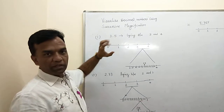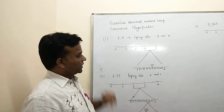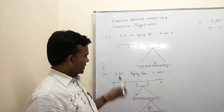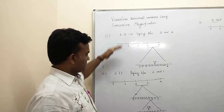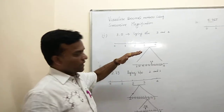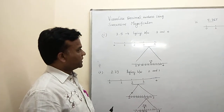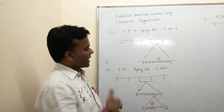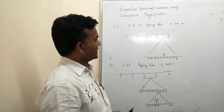Whichever number is given in the question, you write it down. Here we have one-place, two-place, and three-place decimals for illustration.